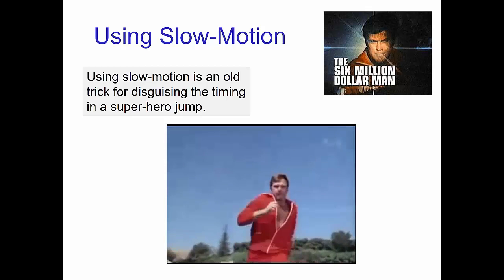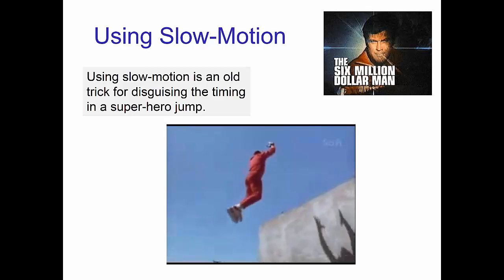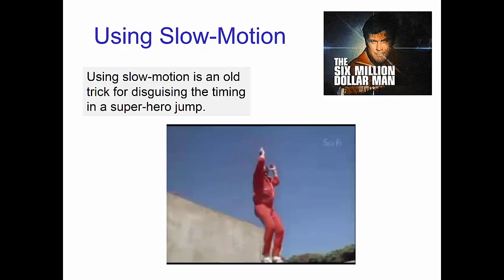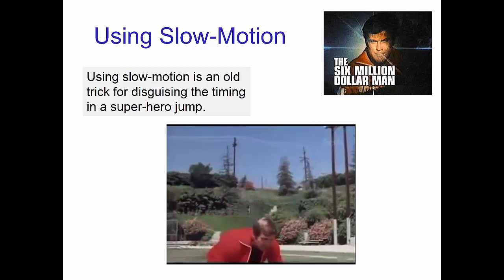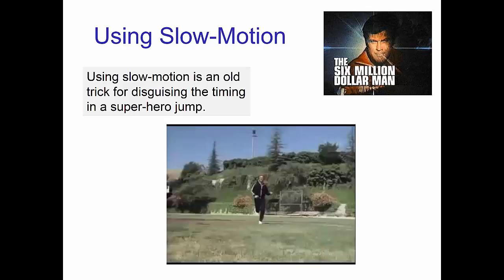Using slow motion is an old trick for disguising the timing in a superhero jump. Here we see an example from the old TV show, The Six Million Dollar Man.